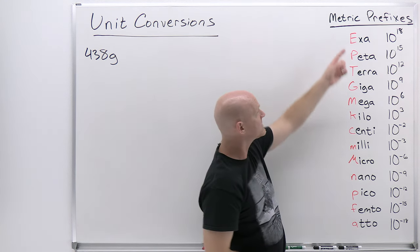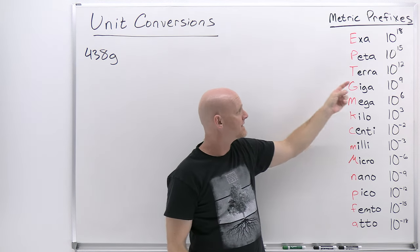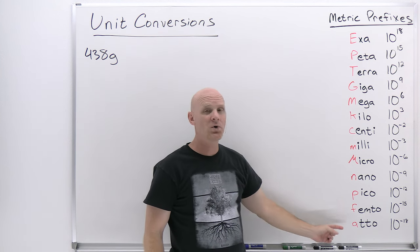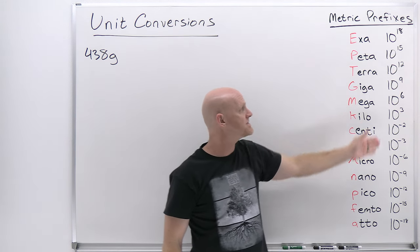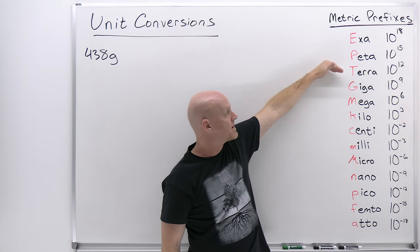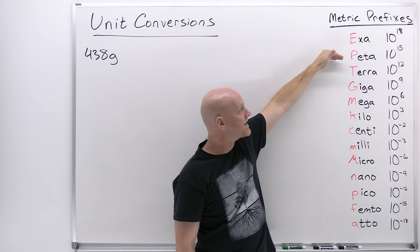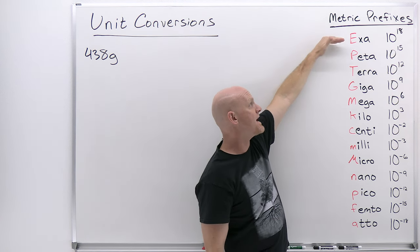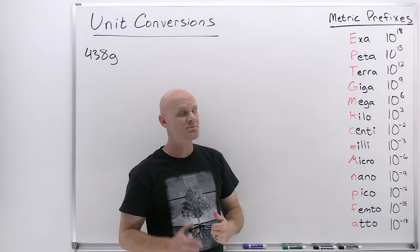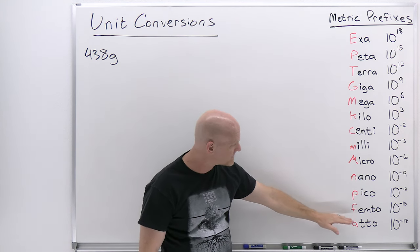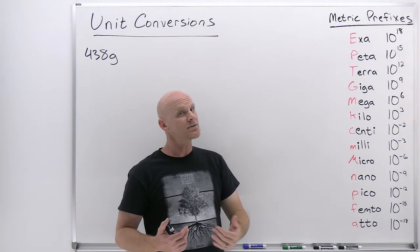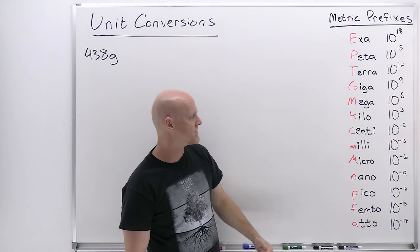The prefixes are: Exa, Peta, Tera, Giga, Mega, Kilo, Centi, Milli, Micro, Nano, Pico, Femto, and Atto. You've got to know what power of 10 each of these means. For some of the bigger ones like 10 to the 15th, the number isn't intuitive. Exa and Peta probably won't be used super often, but they're on most standard lists, so worth your time — same with Femto, Atto, and Pico.